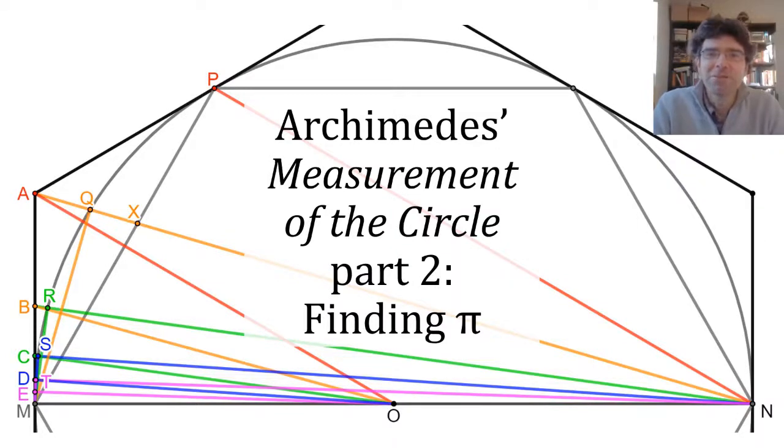Hello everyone. In this video we're going to look at another result from Archimedes' measurement of the circle. This is proof that pi lies between 3 and 10/71 and 3 plus 10/71.